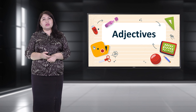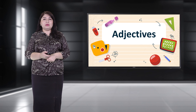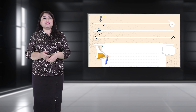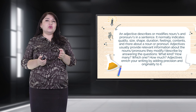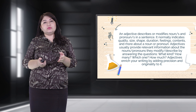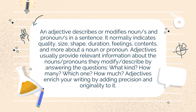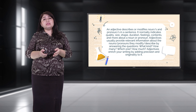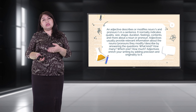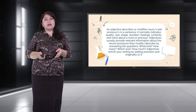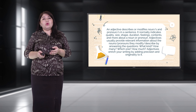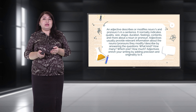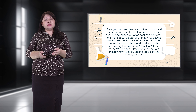Hello everybody, today we are talking about adjectives describing people and personal qualities. An adjective describes or modifies nouns and pronouns in a sentence. It normally indicates quality, size, shape, duration, feelings, contents, and more about a noun or pronoun. Adjectives usually provide relevant information about the nouns or pronouns they modify by answering the questions: what kind, how many, which one, how much.